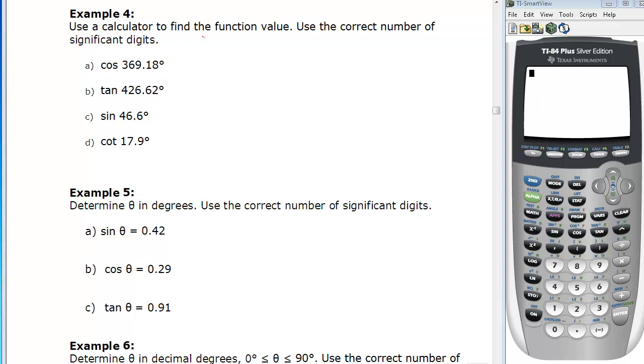The first example says use a calculator to find the function value and use the correct number of significant digits. If we start with five significant digits, we're going to finish with five significant digits. Start with three, finish with three. Example A says to find the cosine of 369.18 degrees.